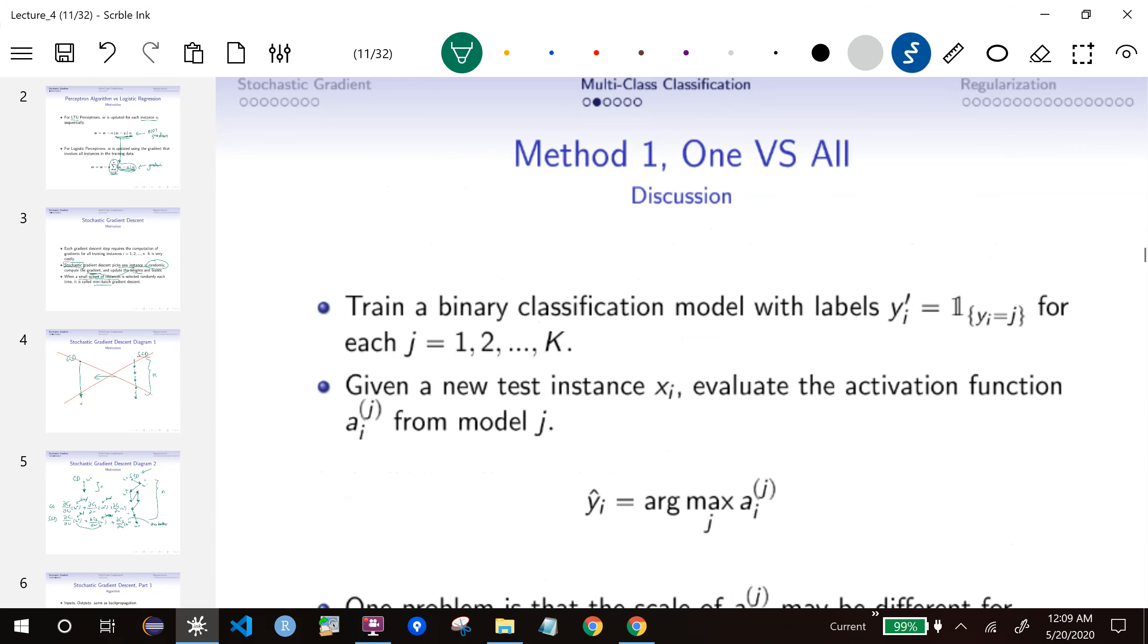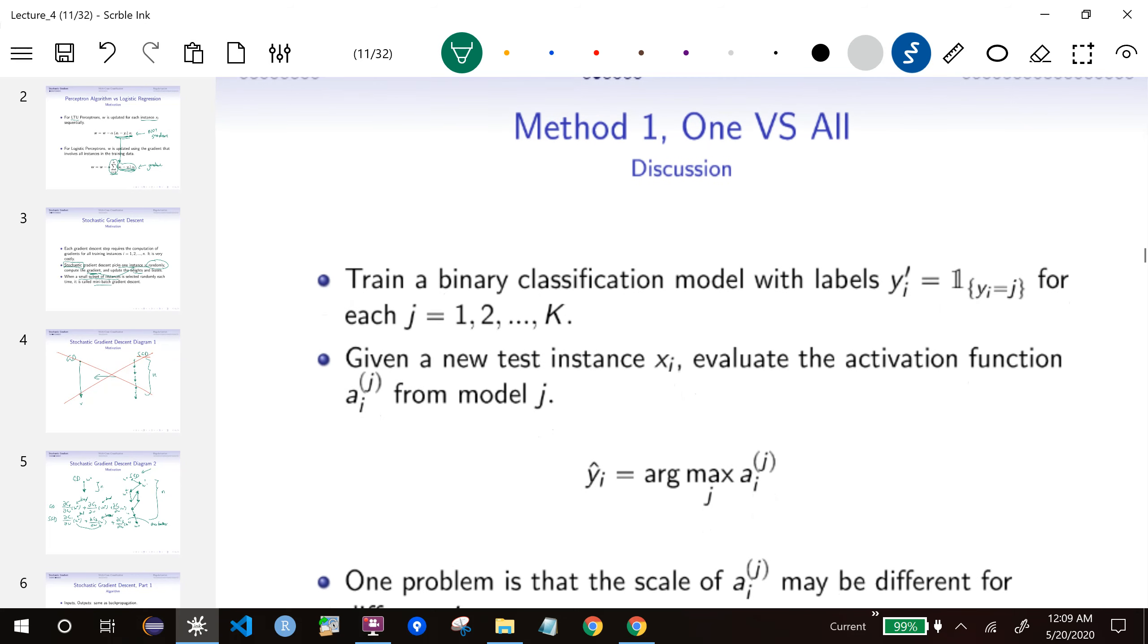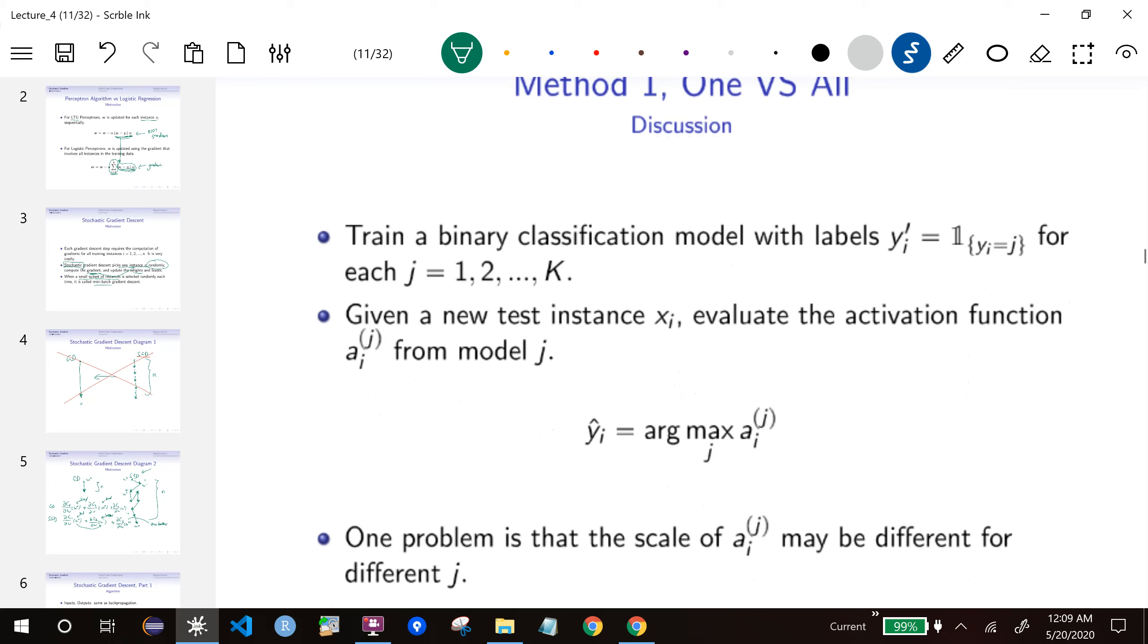The first hack is called one versus all. From the name, you can guess what it is. We are going to train three binary classification models. We'll train three logistic regressions. One is cat versus not cat, and the second one is dog versus not dog, and dragon versus not dragon.